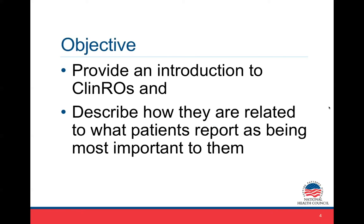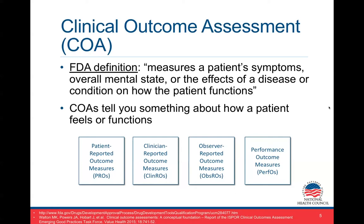Just to recap: Clinical Outcome Assessment, or COA, is an umbrella term. The FDA defines it as something that measures a patient's symptoms, overall mental state, or the effects of a disease or condition on how the patient functions. Essentially, a COA tells you something about how a patient feels or functions. There are four types under the COA umbrella: patient-reported outcome measures, clinician-reported outcome measures, observer-reported outcome measures, and performance outcome measures.